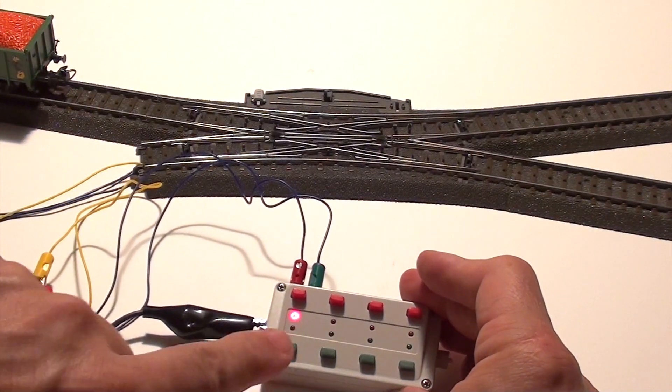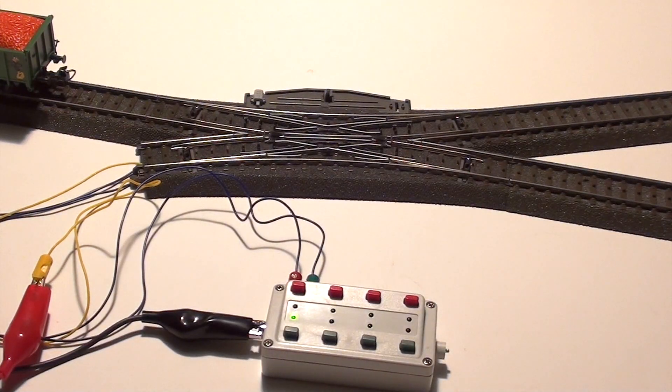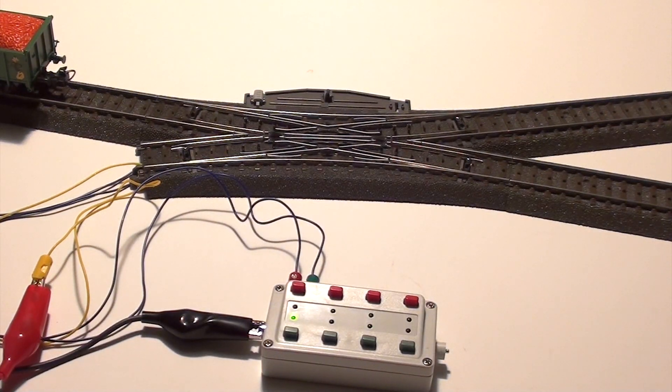We used the crossing in this example, but installing a turnout motor and connecting it is exactly the same for a regular turnout and also for a curve turnout.